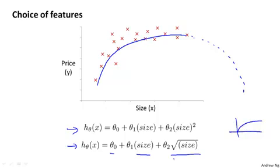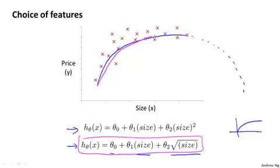And maybe there'll be some value of theta one, theta two, theta three that will let you take this model, and for the curve that looks like that, and goes up but doesn't, but sort of fattens out a bit and doesn't ever come back down. And so by having insight into, in this case, the shape of the square root function, and into the shape of the data by choosing different features, you can sometimes get better models.